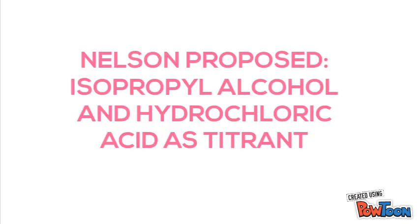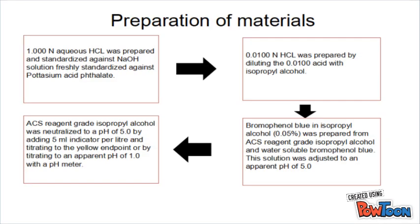Nelson method uses isopropyl alcohol and hydrochloric acid as titrant. For preparation of materials: 1N HCl was prepared and standardized against NaOH solution freshly standardized against potassium acid phthalate. 0.01N HCl was prepared by diluting 0.01 acid with isopropyl alcohol. Bromophenol blue in isopropyl alcohol was prepared from ACS reagent grade isopropyl alcohol and water-soluble bromophenol blue. ACS reagent grade isopropyl alcohol was neutralized to a blank of 5 by adding 5 ml per liter and titrating to the yellow endpoint, or by titrating to a pH of 1 with a pH meter.